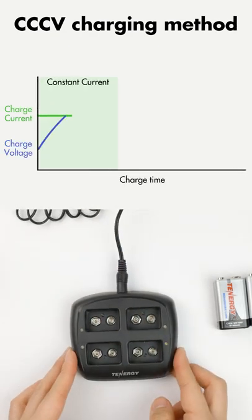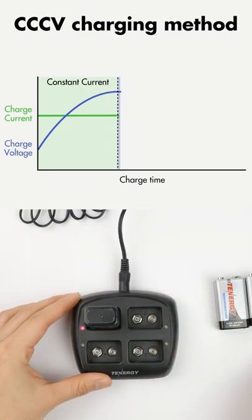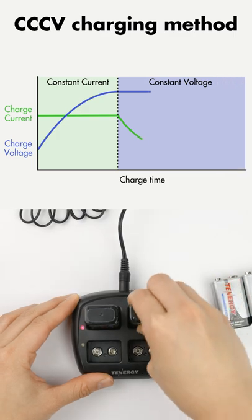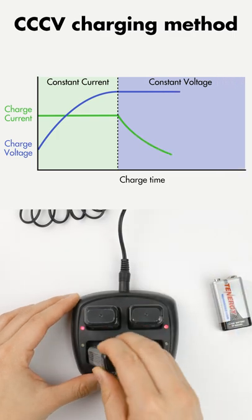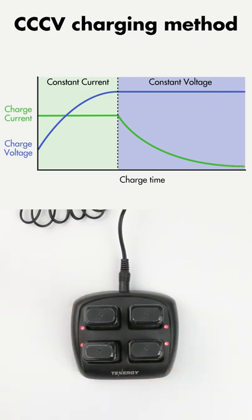The charger will first apply a constant current to charge the battery until it reaches a certain value, then it switches to constant voltage mode in which the charger will maintain the battery's voltage and decrease the current over time until the battery is fully charged.